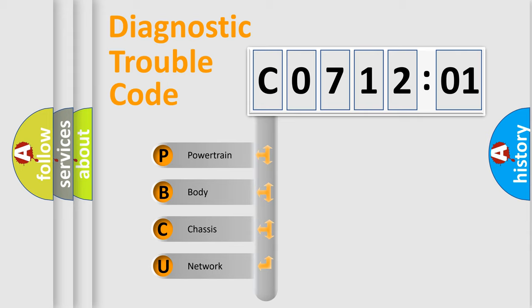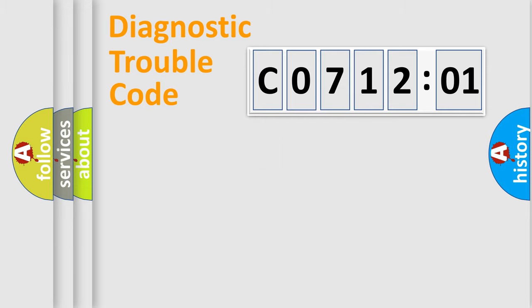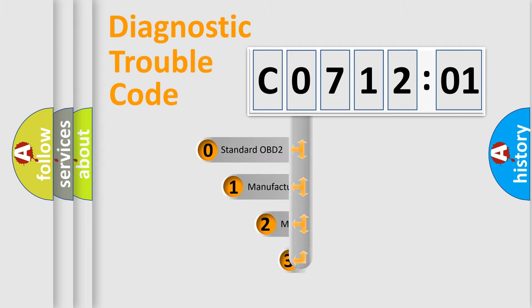We divide the electric system of automobile into four basic units: Powertrain, Body, Chassis, and Network. This distribution is defined in the first character code.